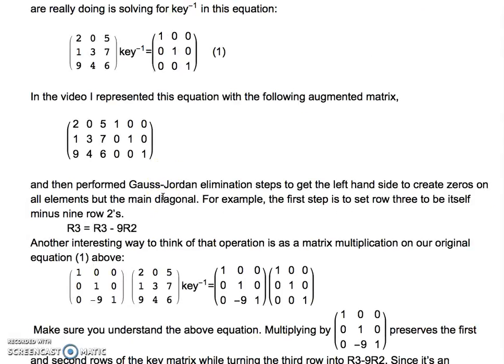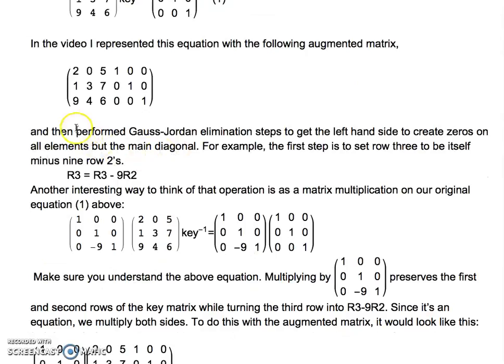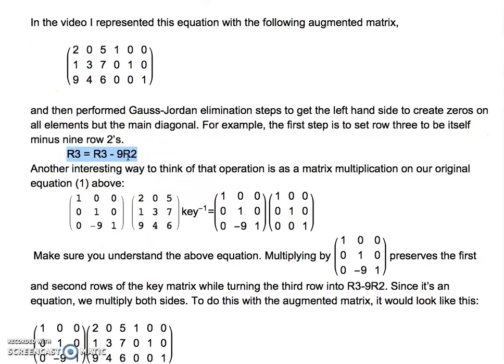The way that we go about that is to perform these Gauss-Jordan elimination steps to get zeros in all but the main diagonal elements, and we'll do that one at a time in the way we solved linear systems last unit. For instance, if we want to get rid of this nine and make it zero, we would make row three itself minus nine row twos.